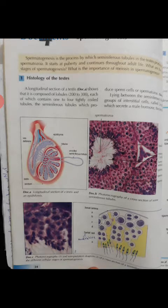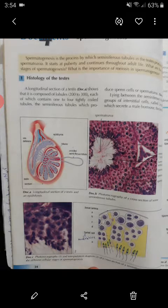Spermatogenesis as a definition: spermatogenesis is a process by which diploid spermatogonium changes into haploid gametes called sperm cells. Diploid cells make meiosis to produce haploid cells. When this process occurs inside testicles, this is called spermatogenesis.